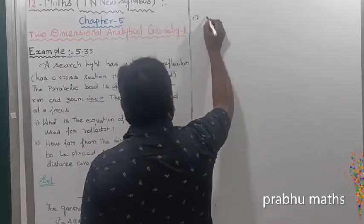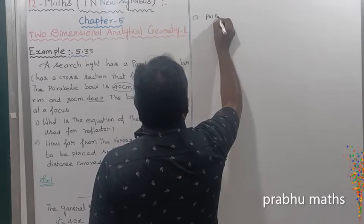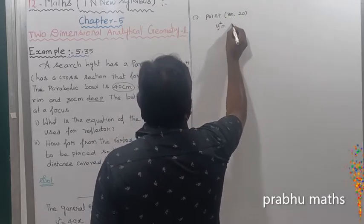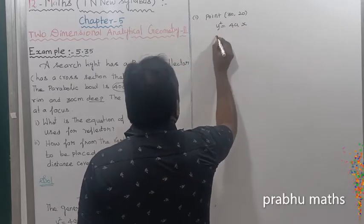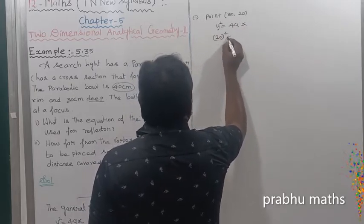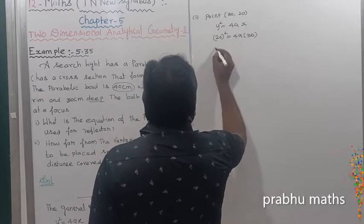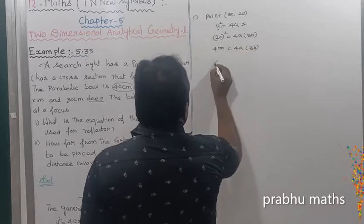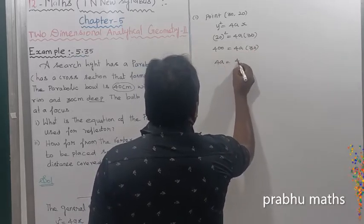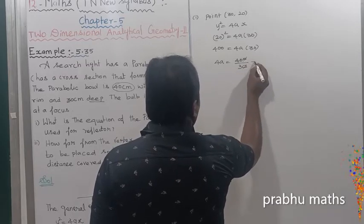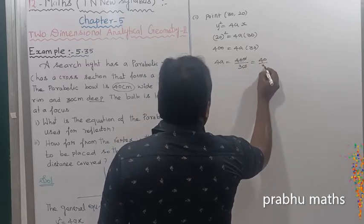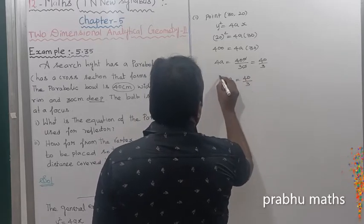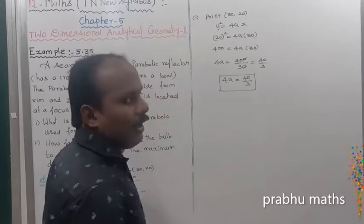For the first question, the point is (30, 20). Using y squared equals 4Ax, y is replaced by 20: 20 squared equals 4A times 30, so 400 equals 4A times 30. Therefore 4A equals 400 divided by 30, which cancels to 40 divided by 3, so 4A equals 400 divided by 3.